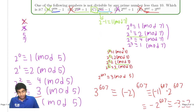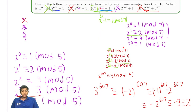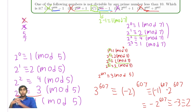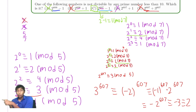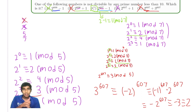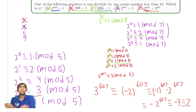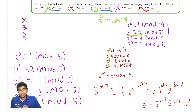To summarize, the key idea was to look at each of the primes 2, 3, 5, and 7, and check which answer choices were divisible by each. Using elimination, we found that C is the last one standing. Thanks for watching!